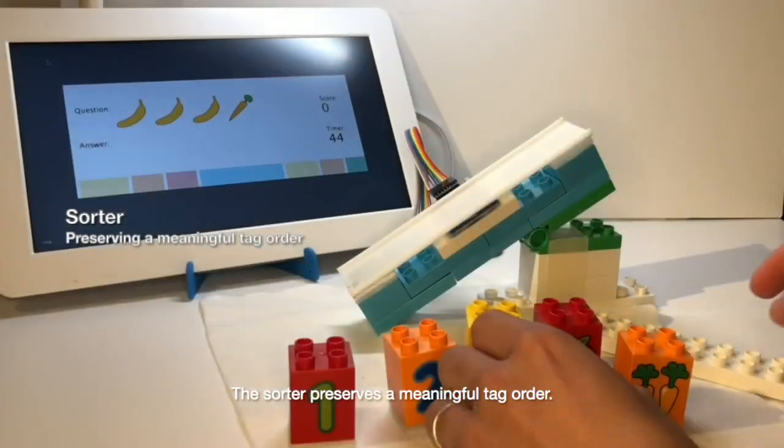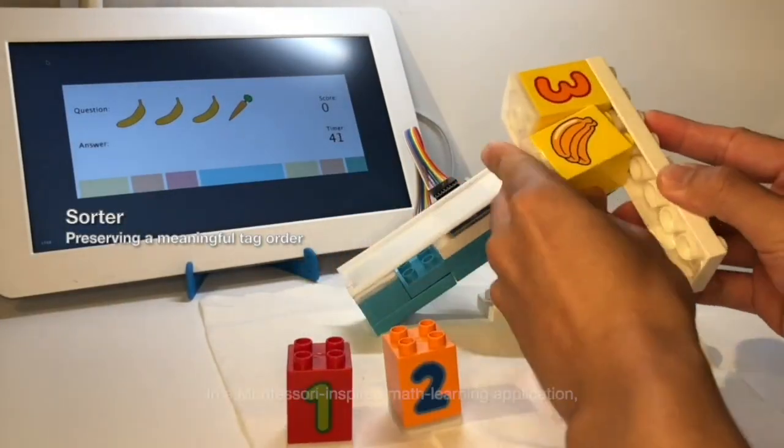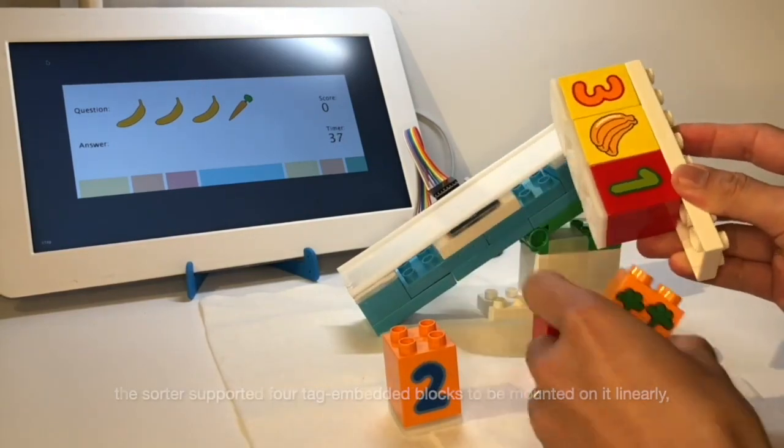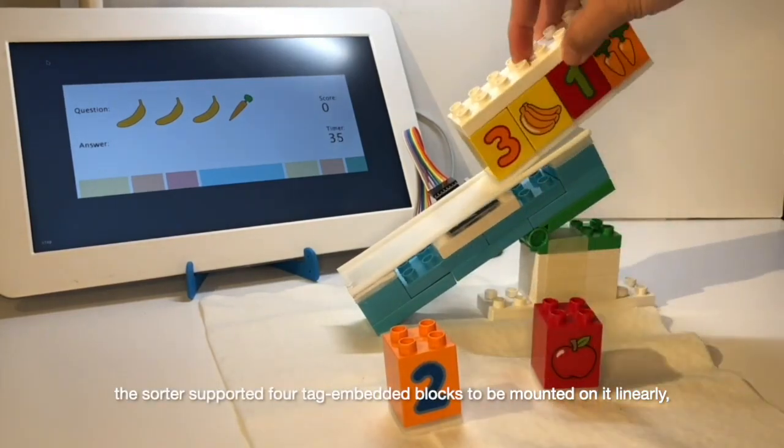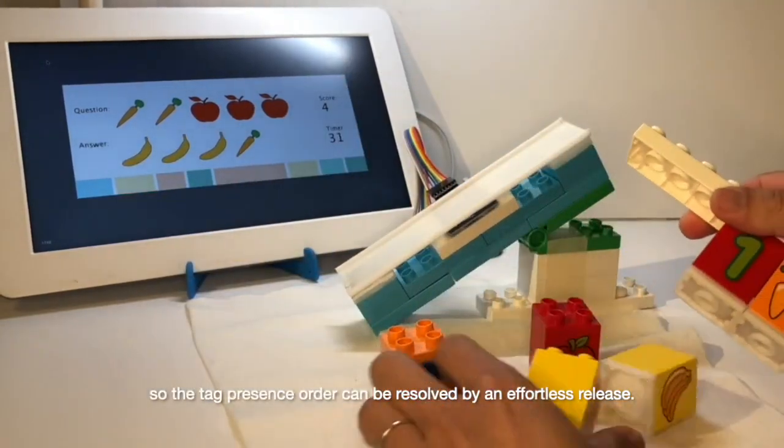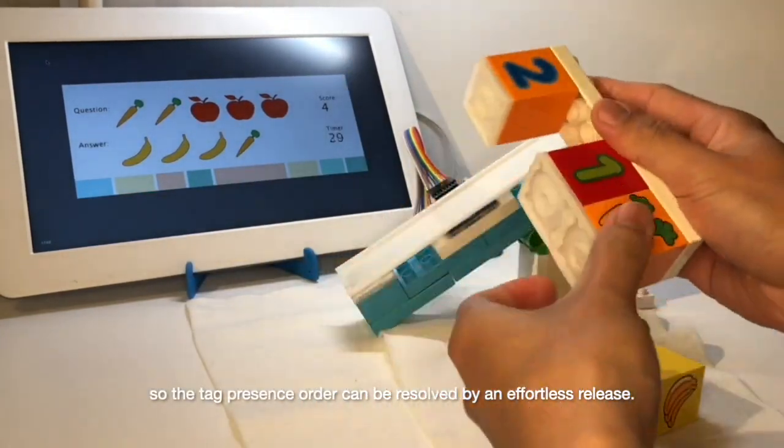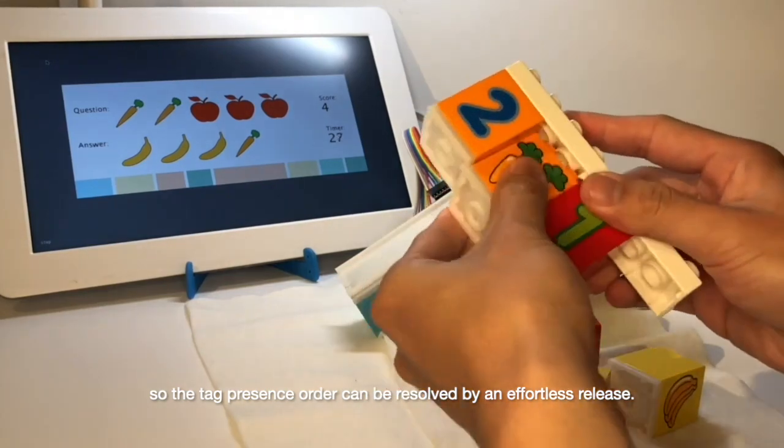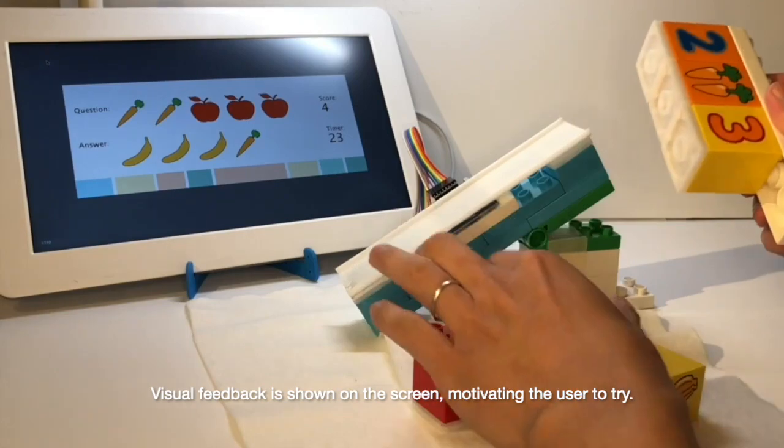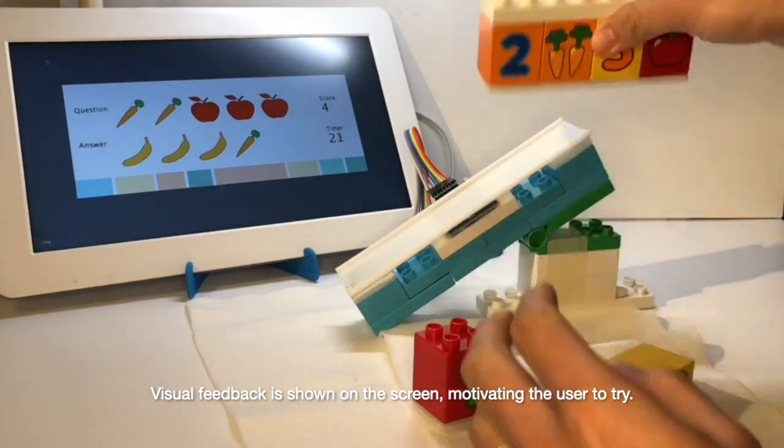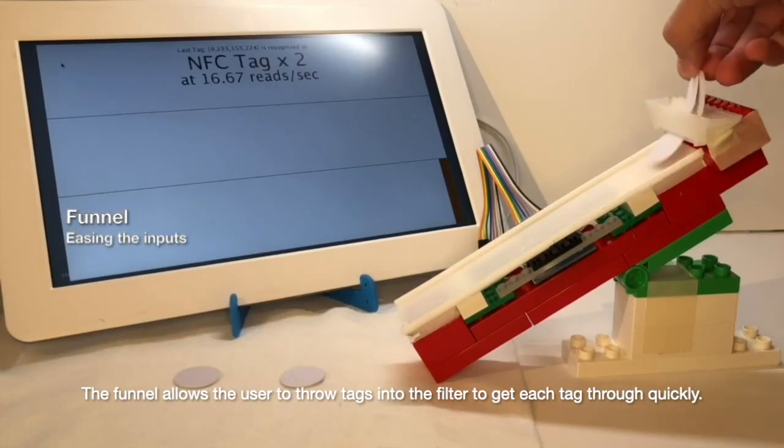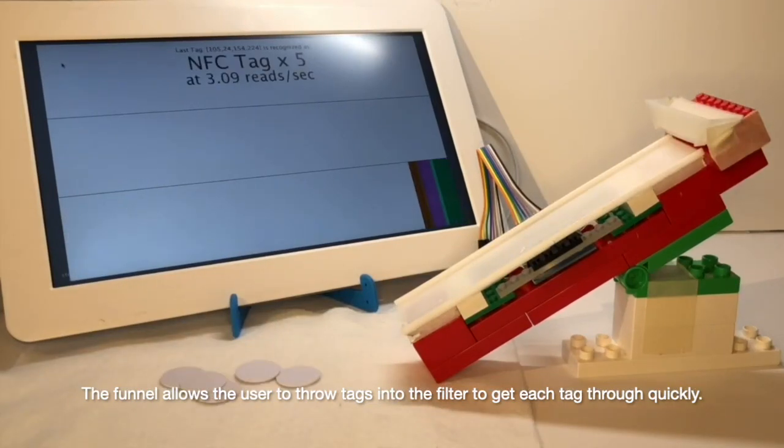The sorter preserves a meaningful tag order. In the Montessori-inspired math learning application, the sorter supports four tag-embedded blocks to be mounted on it linearly, so the tag presence order can be resolved by an effortless release. Visual feedback shown on the screen motivates the user to try.